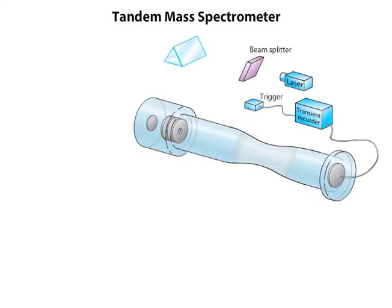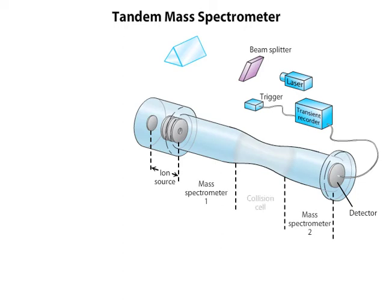All mass spectrometers consist of three essential components: the ion source, the mass analyzer, and the detector. As its name suggests, tandem mass spectrometry utilizes two spectrometers arranged in tandem. The two spectrometers are separated by a collision cell, which contains an ionized inert gas such as helium or argon.